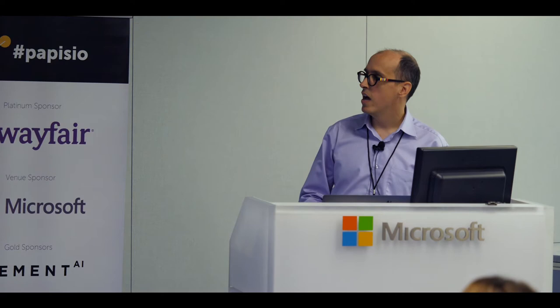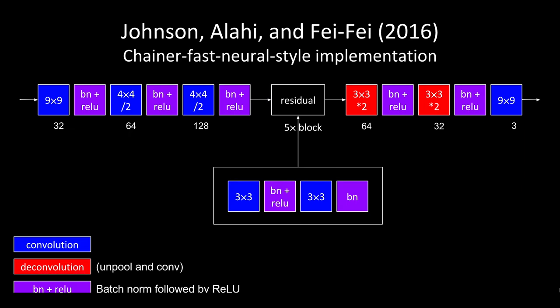The next paper that changed the area is Johnson, Alai, and Fei-Fei, with 'Perceptual Losses for Real-Time Style Transfer and Super-Resolution.' We won't discuss super resolution, but the first part allows it to work in real time. What they did was come up with the idea of using a neural network trained to do directly the transformation from the source to the target — a CNN that transforms directly between source and target, just like our demo.